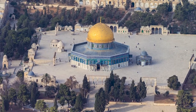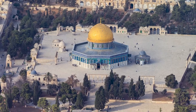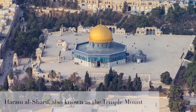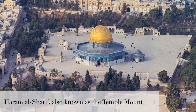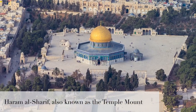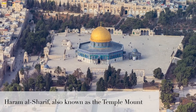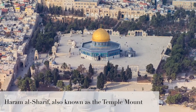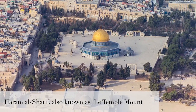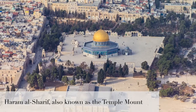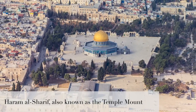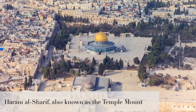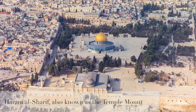The Umayyad Caliph Abd al-Malik ordered it built on the Haram al-Sharif, called the Temple Mount in the Judaic tradition. It's an elevated limestone platform sacred to three of the world's major monotheistic religions: Judaism, Christianity, and Islam.